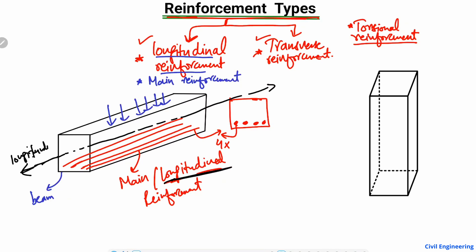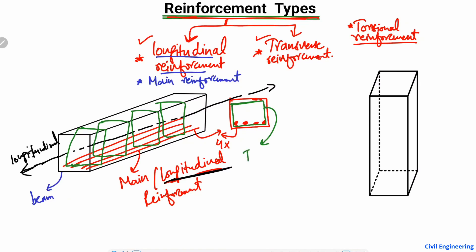Now if I define the second kind of reinforcement in the beam, they are known as the transverse reinforcement. They are provided along the whole length of the beam. In the cross-section we can see this green-colored reinforcement — these are known as the transverse reinforcement.